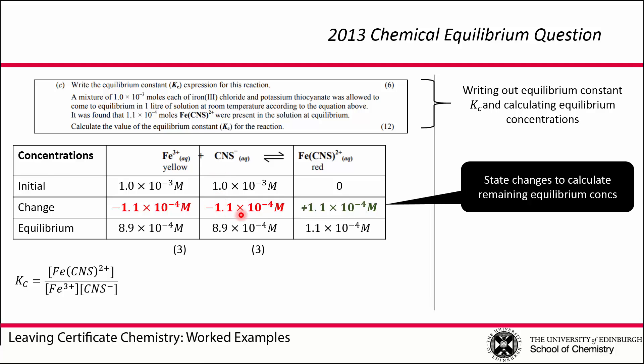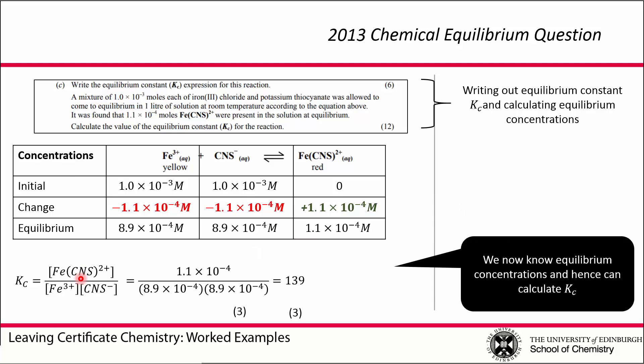That now allows us to calculate the equilibrium concentrations of our reactants. Now we know the equilibrium concentrations of our products and reactants, we can plug those numbers into our expression for Kc: concentration of products divided by concentration of reactants, and that gives us our equilibrium constant value rounding up to be 139.